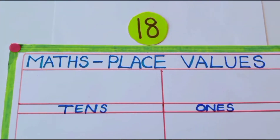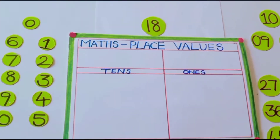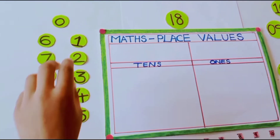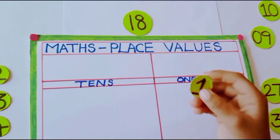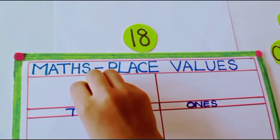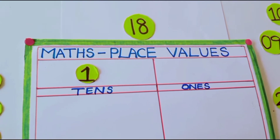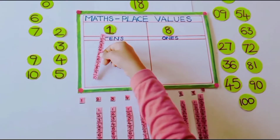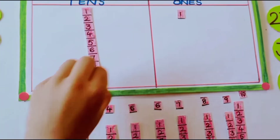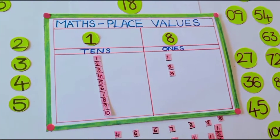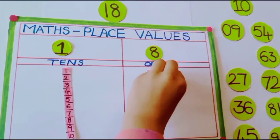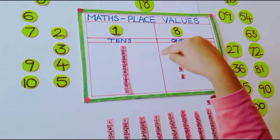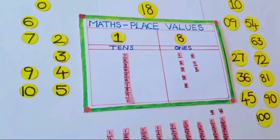Very good. Now what is the number? 18. Very good. In 18, how many tens are there? 1 ten. Very good. And in 18, how many ones are there? 8. Very good. 18 is 1 ten and 8 ones.